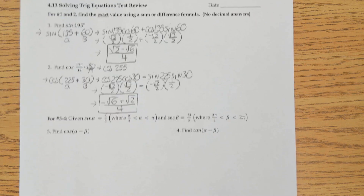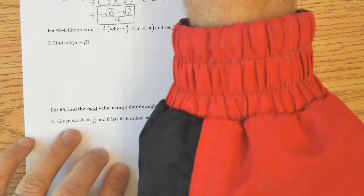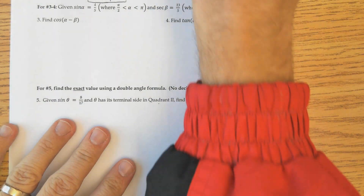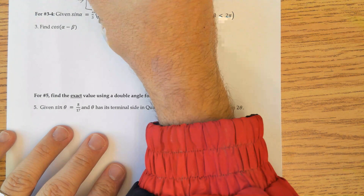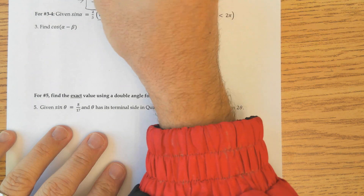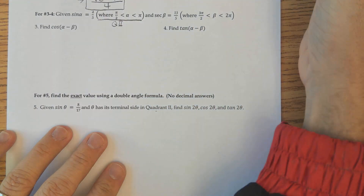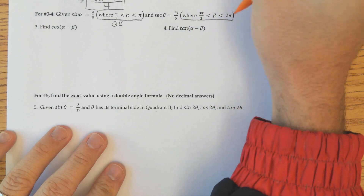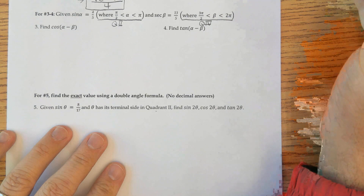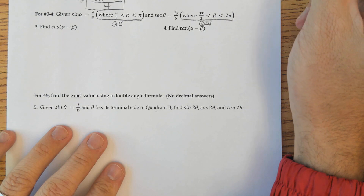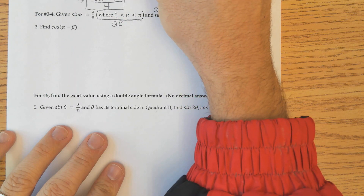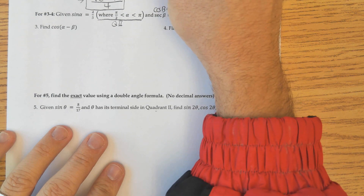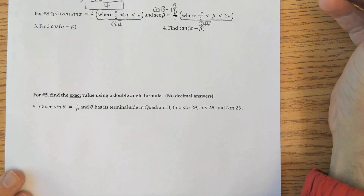Now these next ones are where we're going to have to draw some triangles to solve. We need to understand what quadrant we're going to be in. Little a is in quadrant 2 (pi over 2 to pi). Big B is in quadrant 4. Also, instead of secant, I want to find cosine — they are reciprocals — so cosine of big B is 5 over 13. Now we know sine of little a and cosine of big B.